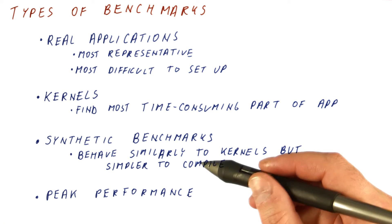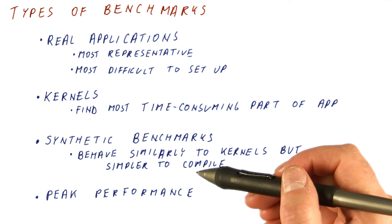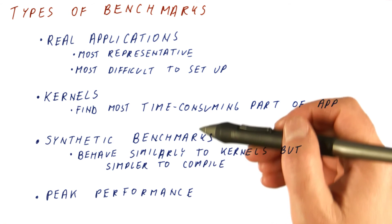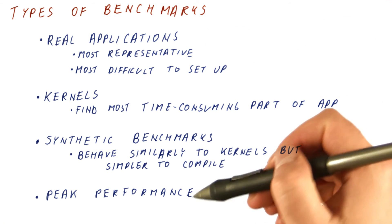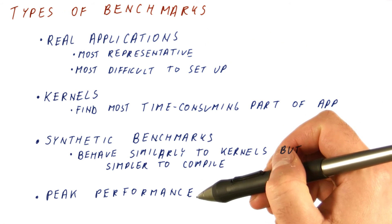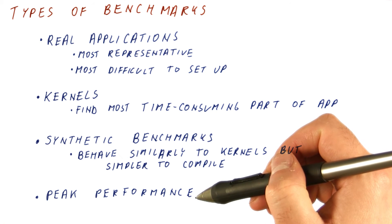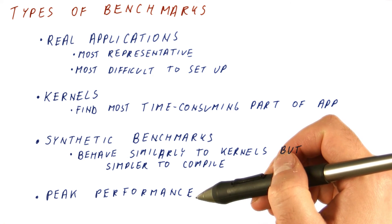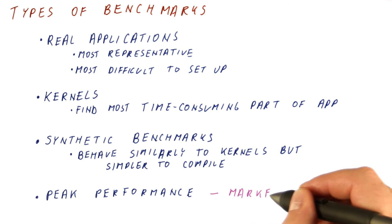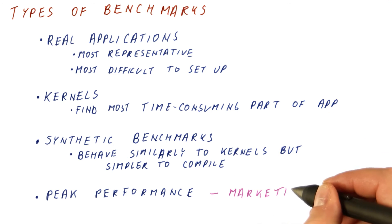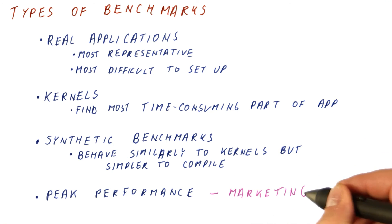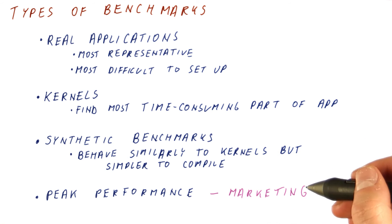And finally, we can compare machines not based on how well they perform on some actual code that they're running, but purely based on peak performance — in theory, how many instructions per second should this machine be able to execute? Usually, peak performance is only good for marketing; it doesn't tell us very much about the actual performance of the machine.